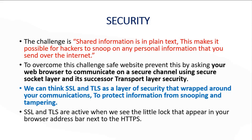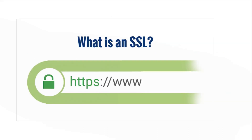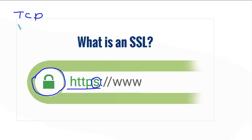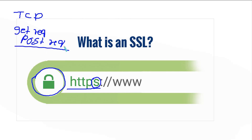Next to the HTTPS in the address bar, you will see a lock icon. The 'S' in HTTPS stands for security. We know that GET requests and POST requests are used to communicate — but these GET and POST requests should be secure. For that reason, we have SSL and TLS.